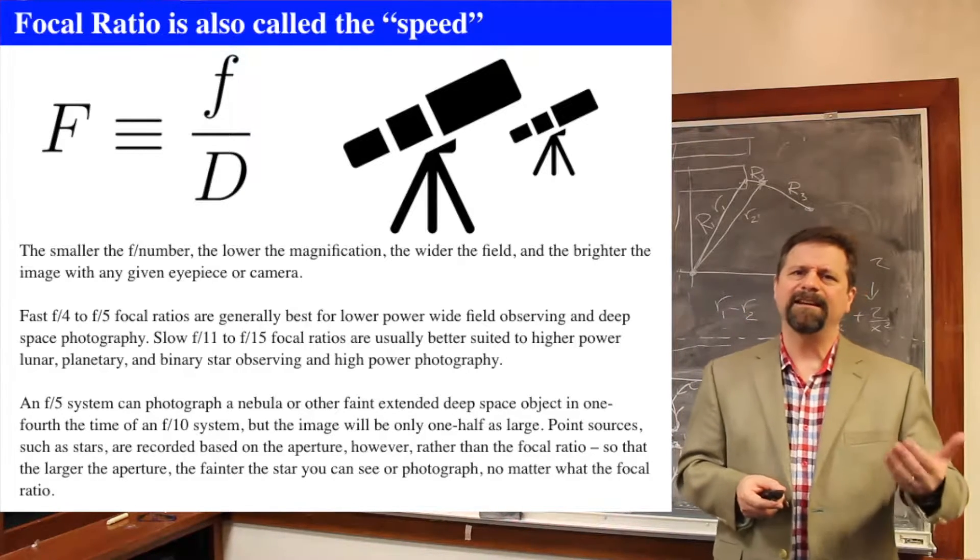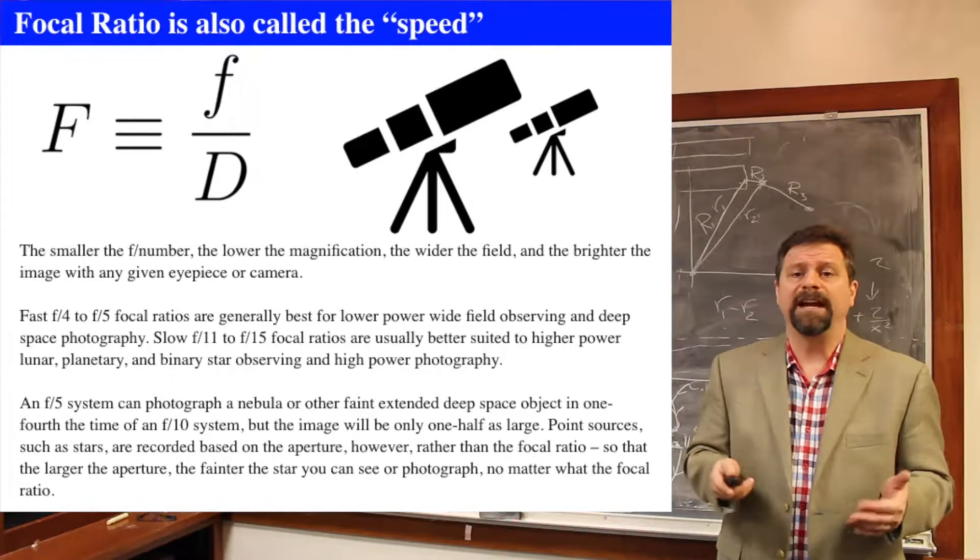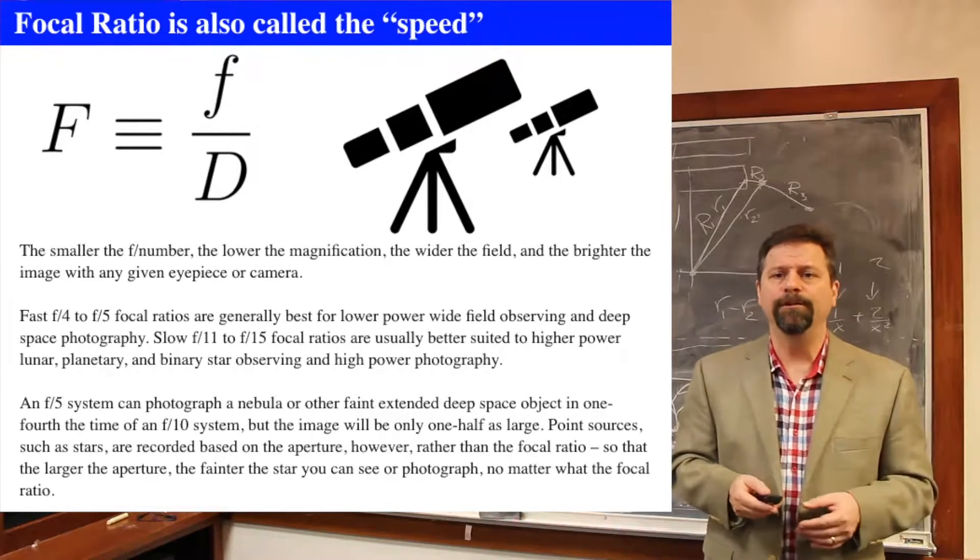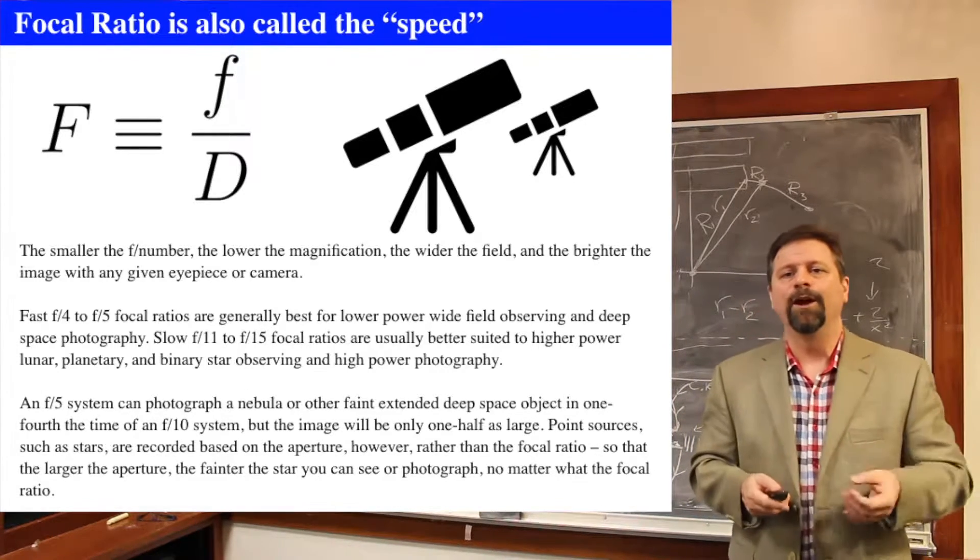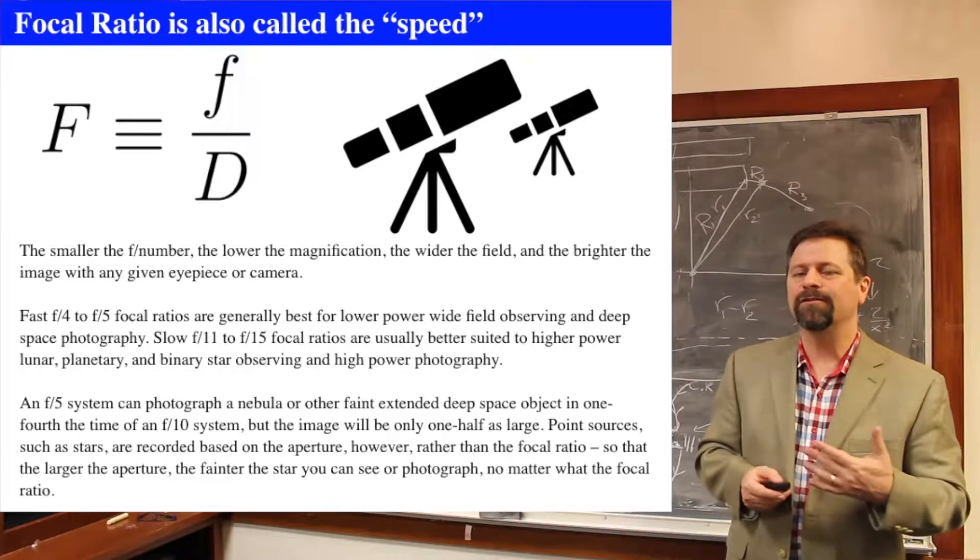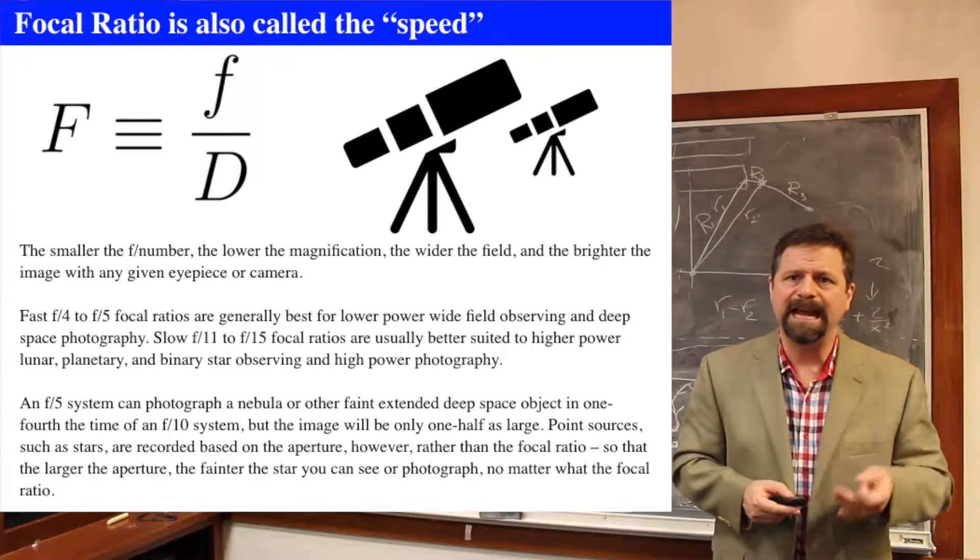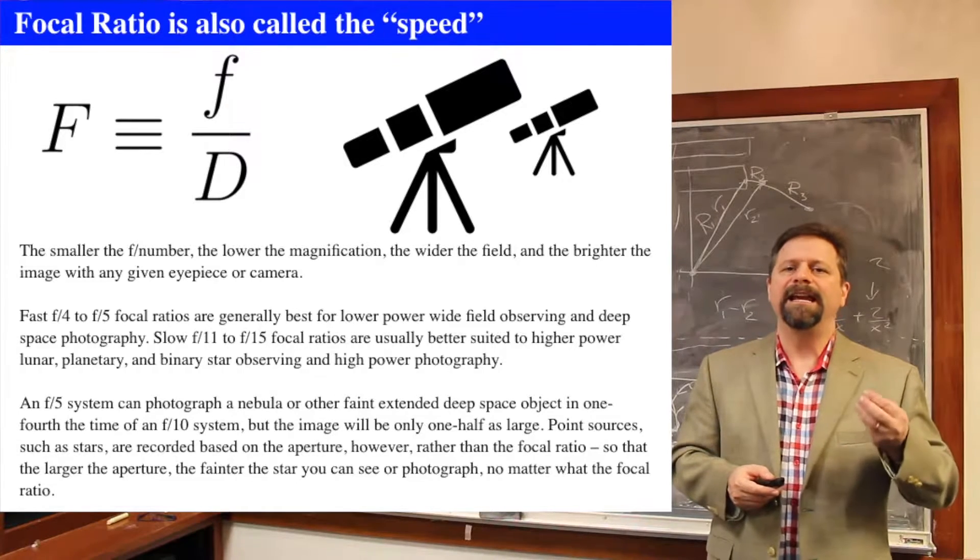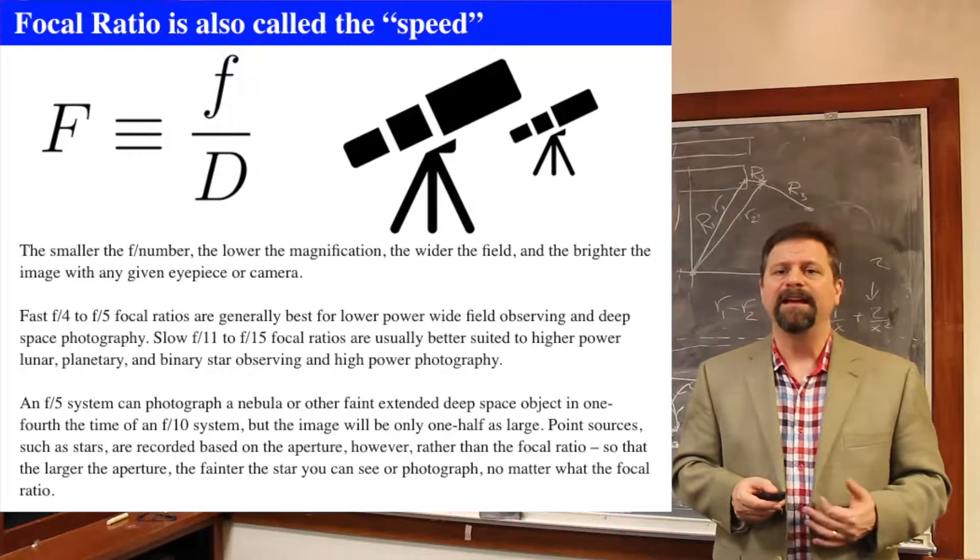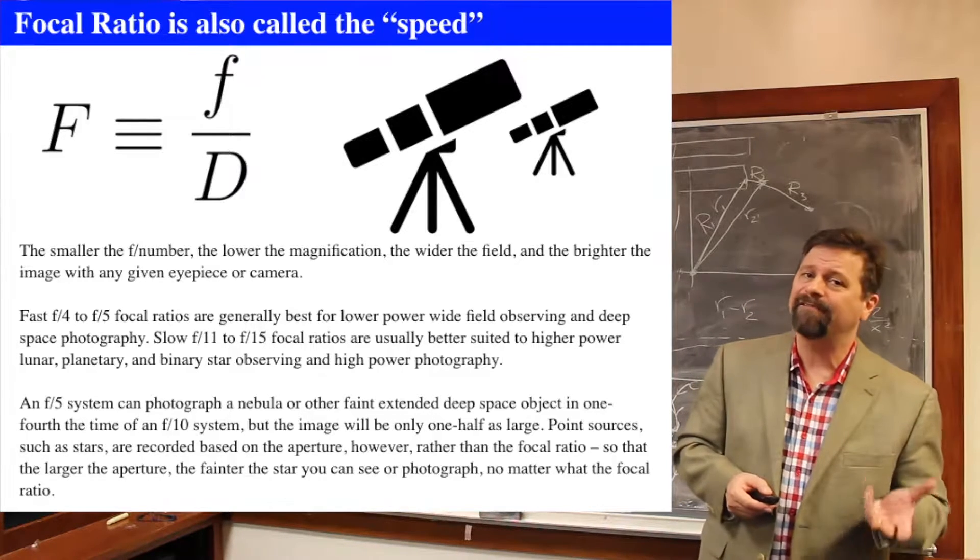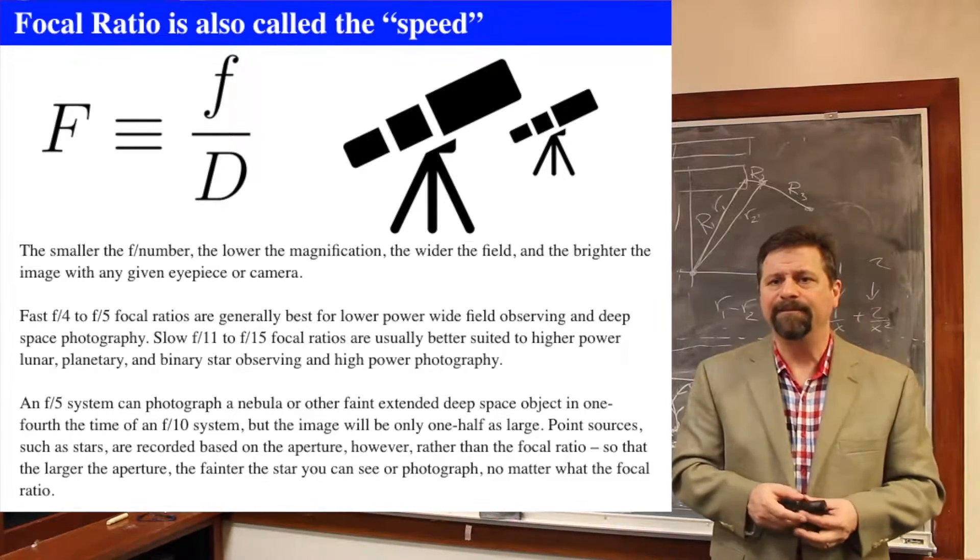If you compare an F5 system to an F10 system, what that means is that for a given diameter, the F5 system will be able to image an extended object, specifically an extended object like a nebula, in a much quicker rate of time, about a quarter of the time, but it will only be half as large an image at your detector.